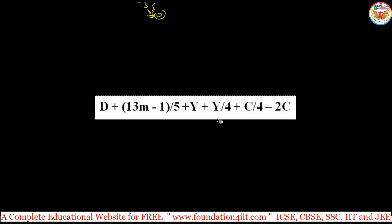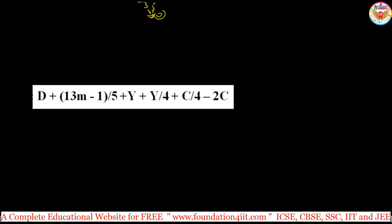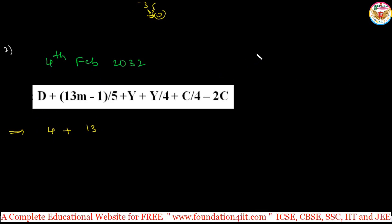Let me take one more example involving January or February to make it clear. Take 4th February 2032. Here d = 4. For m, February is the last month in Zeller's ordering — March=1, April=2 ... so February is 12. So we have: 4 + ⌊(13×12 − 1)/5⌋ + y + ⌊y/4⌋ + ⌊c/4⌋ − 2c.